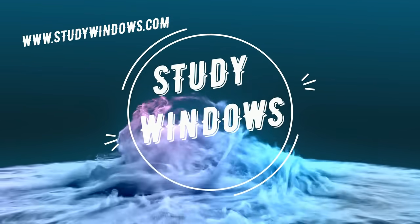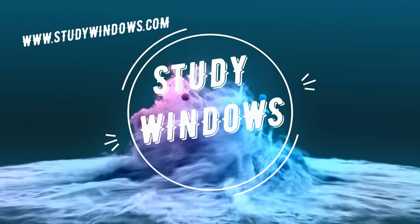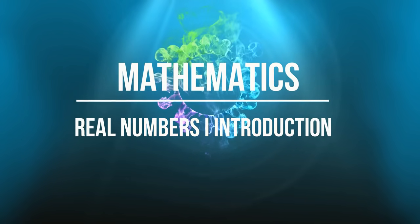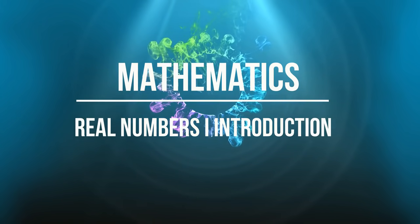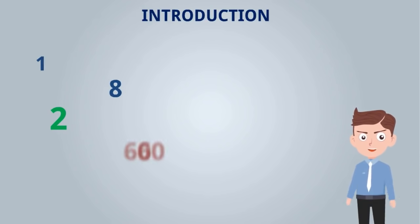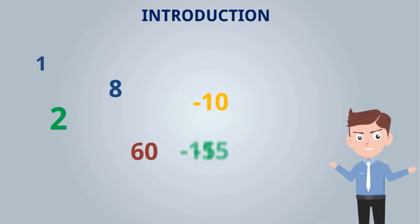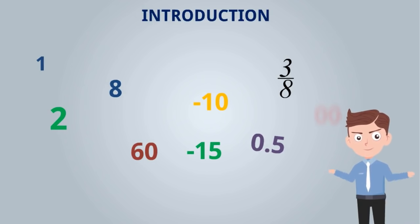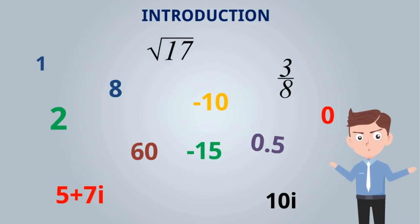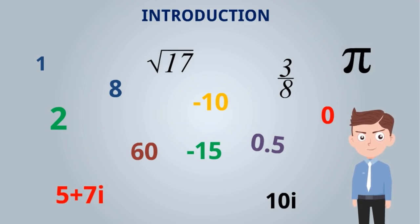Hi everyone, this is Firan and welcome to Study Window. Today we are going to learn real numbers. To know the real numbers, it is very much necessary to understand numbers first. Let's see: 1, 2, 8, 60, minus 10, minus 15, 0.5, 3/8, 0, 10, i, 5 plus 7i, root 17, pi.